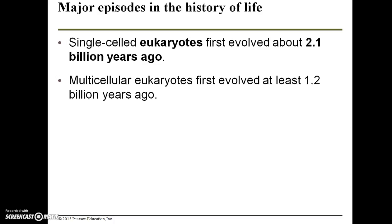Single-celled eukaryotes, which are cells with a true nucleus as well as organelles, first evolved about 2.1 billion years ago. And multicellular eukaryotes first evolved at least 1.2 billion years ago.